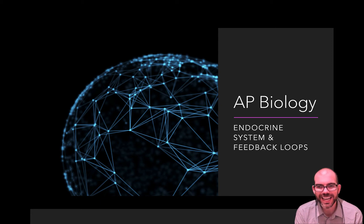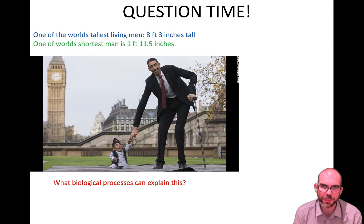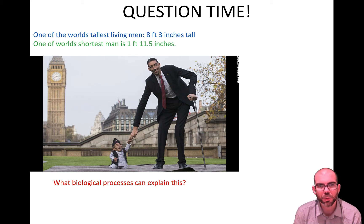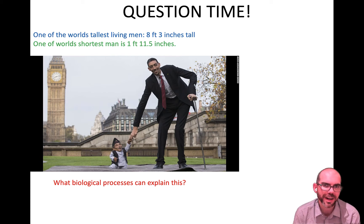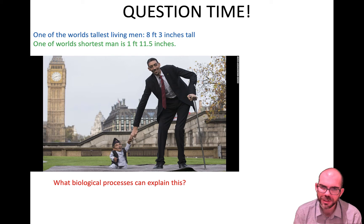Hi everyone, this lesson is on the endocrine system and feedback loops. Let's start with a question. Here you can see a picture of who was once the world's tallest man at 8 foot 3 inches, and an image of who was once the world's shortest man at 1 foot 11. What biological process do you think could explain these extremes?